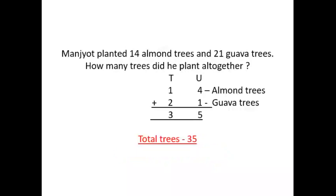Next. Manjok planted 14 almond trees and 21 guava trees. How many trees did he plant altogether? Again 'altogether' indicates addition. First number is 14: 1 ten, 4 units. Second number is 21: 2 tens, 1 unit. We put the plus sign. Start from units: finger 1, mind 4. 4 plus 1 is 5.